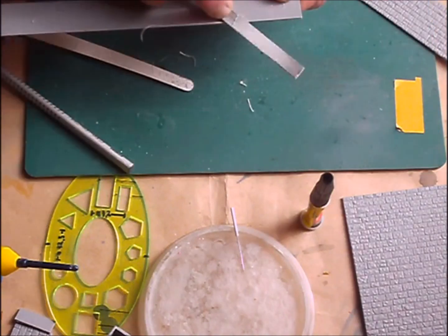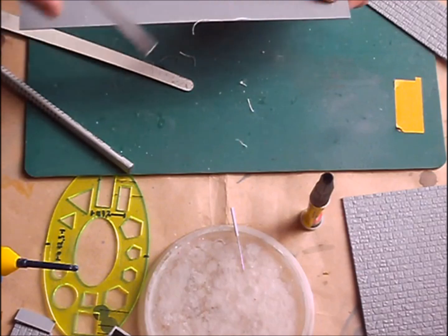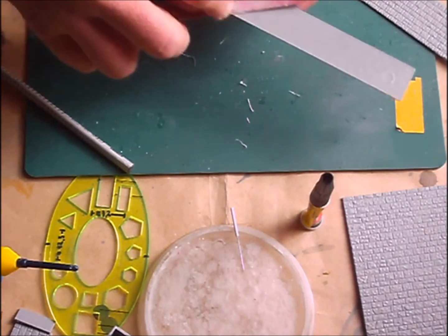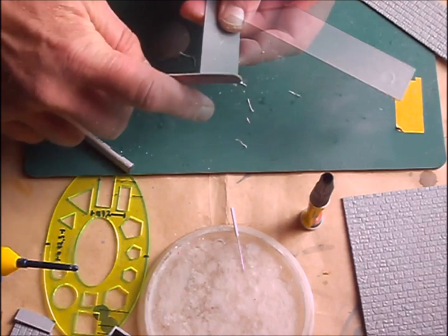To clean up the edges keep holding the file diagonal to the part and work sideways. That way you avoid filing nasty edges into the styrene. A file removes quite a lot of material each pass you make depending on how much you press your tool onto the edge. So work carefully and slowly. All that's been removed is gone forever. To get smooth edges I used a sanding stick after filing the part.